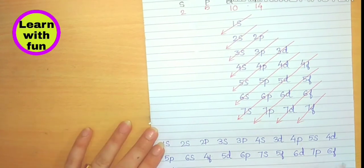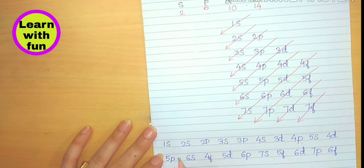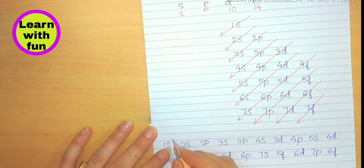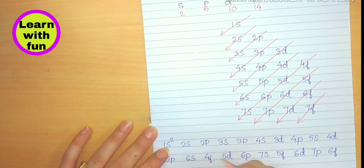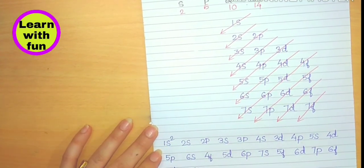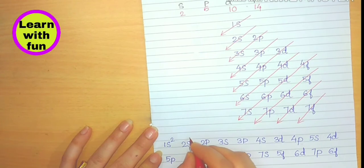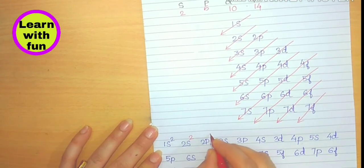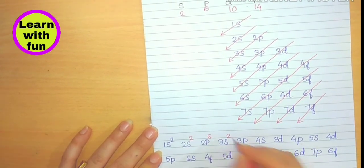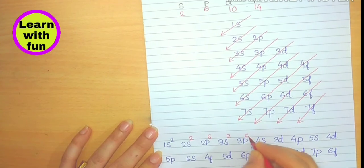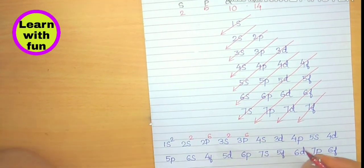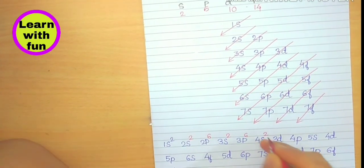So this is the order. Now let's fill electrons in these subshells. 1S2—S subshell can fill 2 electrons, so we will write 2 here. Let's take a red pen. Again, 2S2. P can fill 6, 6, 6S2 again. P subshell can occupy 6 electrons. So 6, S again 2.